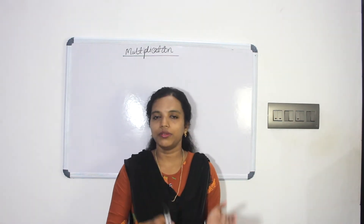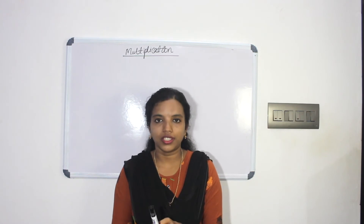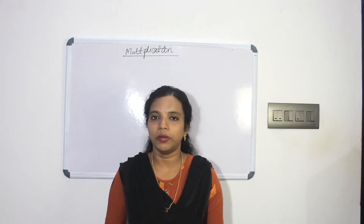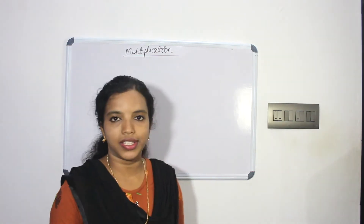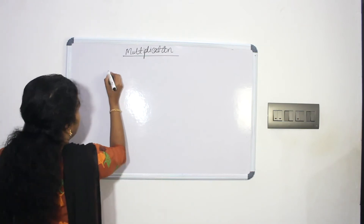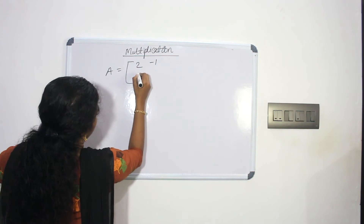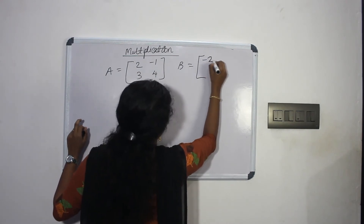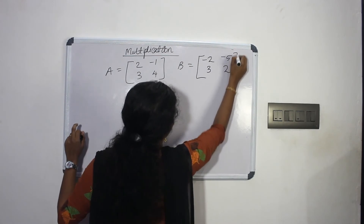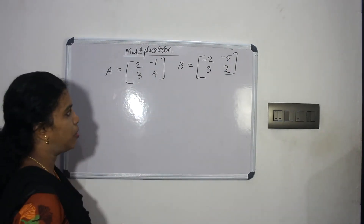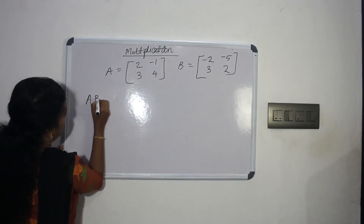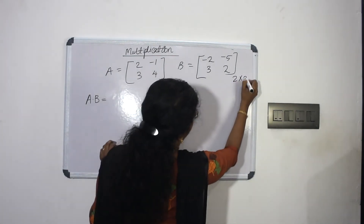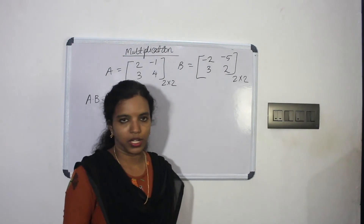Next we will start with multiplication. Matrix A equals 2, -1, 3, 4 and matrix B equals -2, -5, 3, 2. Now we have two 2x2 matrices A and B. This is matrix A multiplied by B.